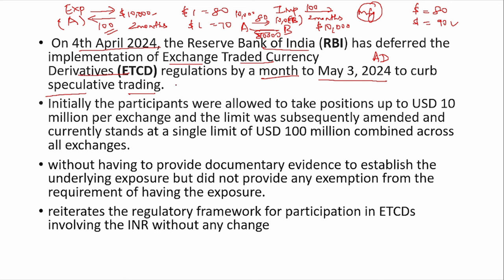You buy this ETCD through an authorized dealer (AD). According to RBI, you can get into this ETCD only if you have an underlying exposure. For an exporter, he has an export order — that is his exposure. Similarly, an importer has an import order — that is his underlying exposure.